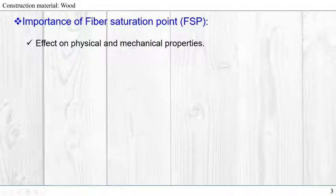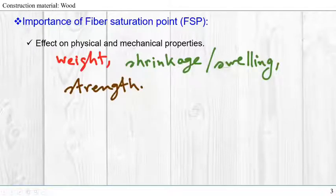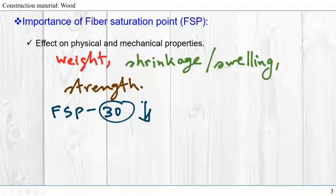Now we're going to talk about the importance of FSP. Fiber saturation point affects the physical and mechanical properties of the wood. We know that moisture content affects the weight, shrinkage, swelling, and strength. Thus, if we have moisture content below this 30 percent, then our physical and mechanical properties will change.